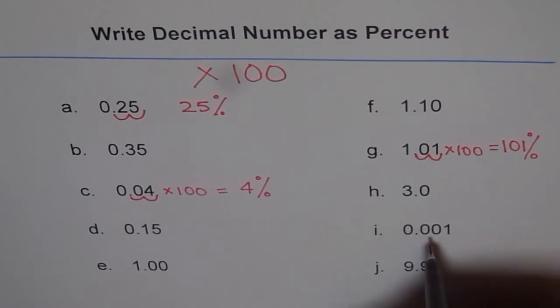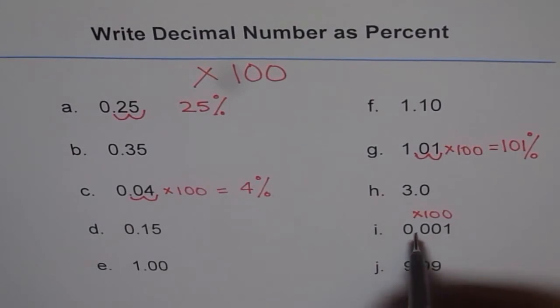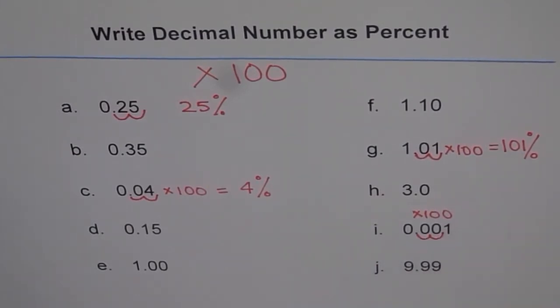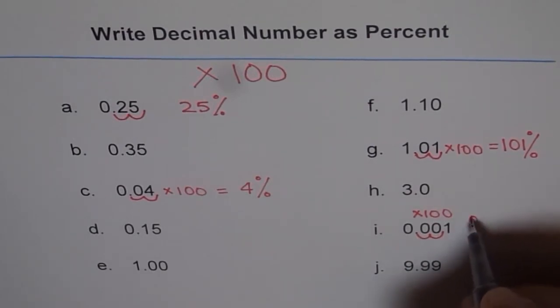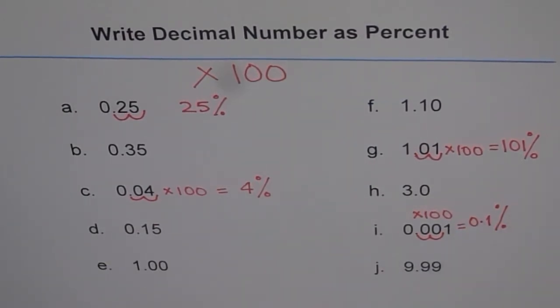If I times this by 100, that means 0.001, so it goes two places to the right and I get 0.1%. Do you see that? So that is 0.1%. Do the rest and see if you have any difficulties.